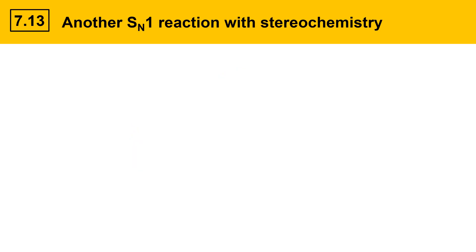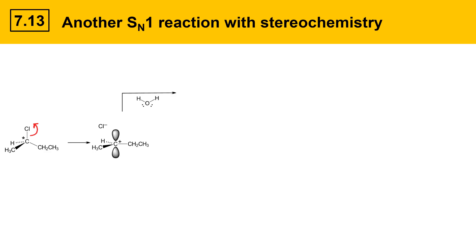This slide covers another example for additional practice. Here we have a tertiary alkyl chloride. It forms a carbocation intermediate, which is flat and has two faces — a top face and a bottom face — that are both open for attack by a nucleophile. In this case, the nucleophile is going to be water. Water can approach and attack from the top face, and when it does, the nucleophile comes in and makes a bond to that face. That gives this product.